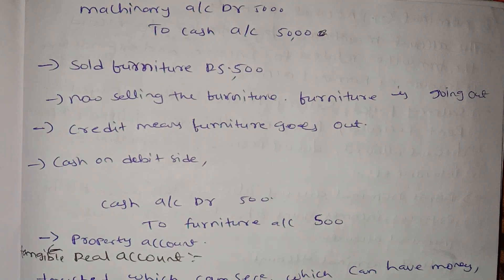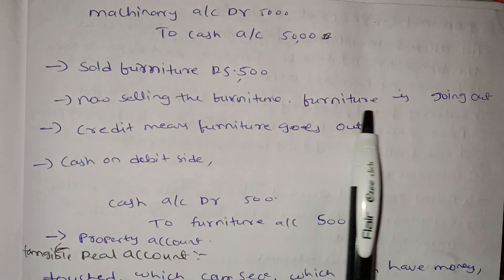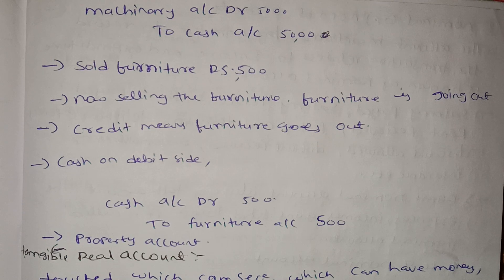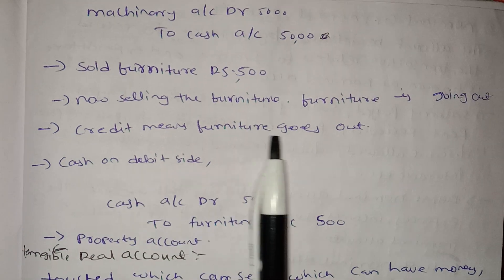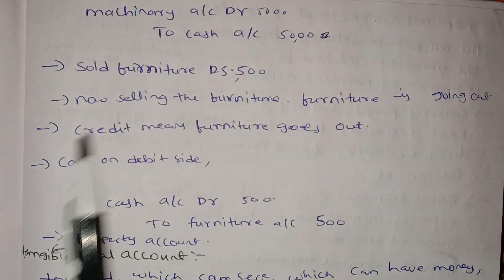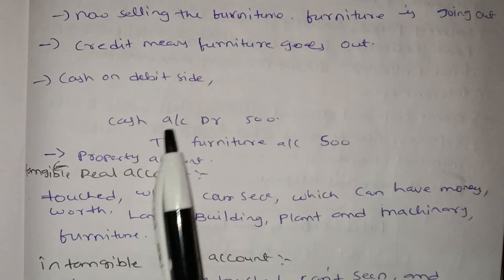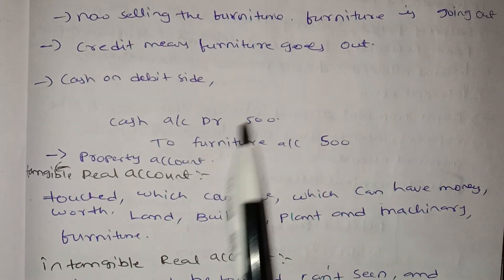Next example: sold furniture for Rs. 500. Furniture is going out — we are selling it. What goes out is credited. So furniture account is credited. Cash is coming in — cash is the receiver. Cash account is debited 500, and furniture account is credited.